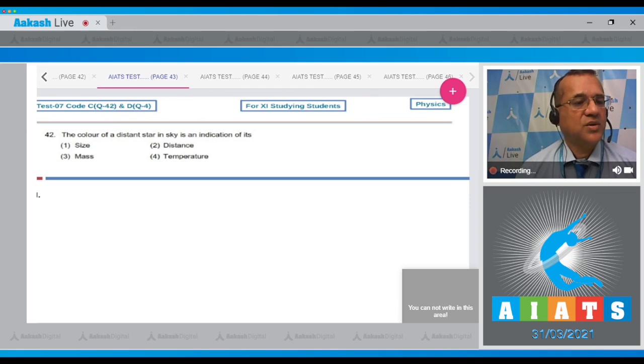Question number 42: The color of a distant star in the sky is an indication of its size and distance, mass, or temperature. There is a star and you know that the color of the star means the wavelength.